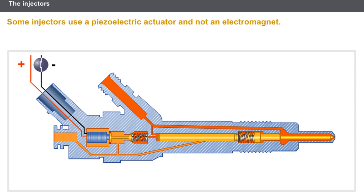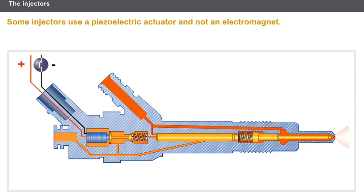Under the effect of the voltage, the piezoelectric component's volume increases. The discharge valve moves and creates a fuel leakage to the fuel return circuit. The piezoelectric component is then discharged and returns to its initial volume, and the discharge valve closes.